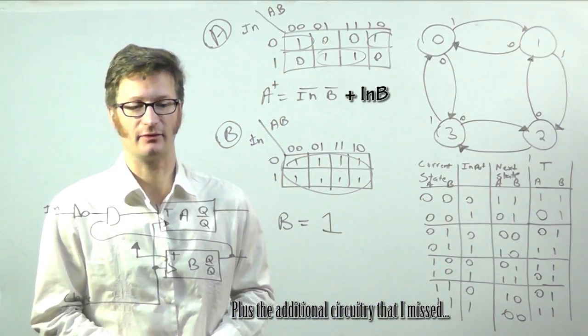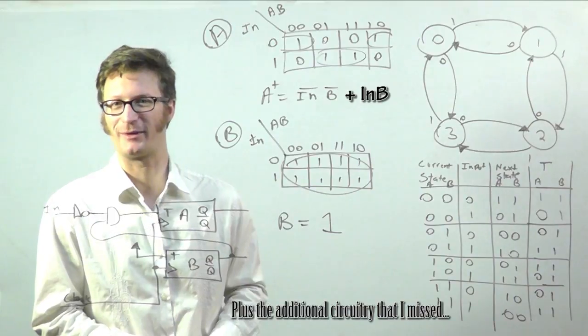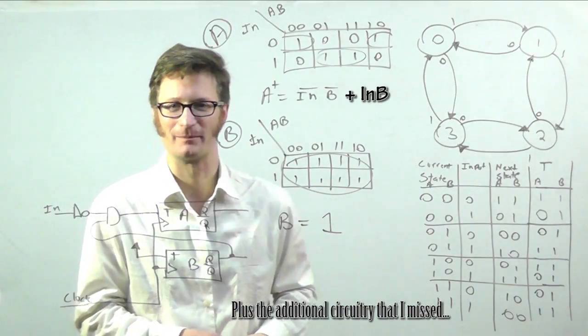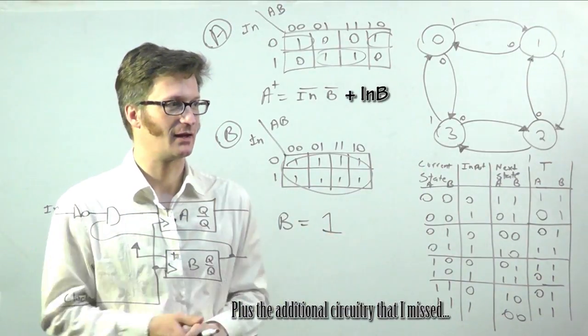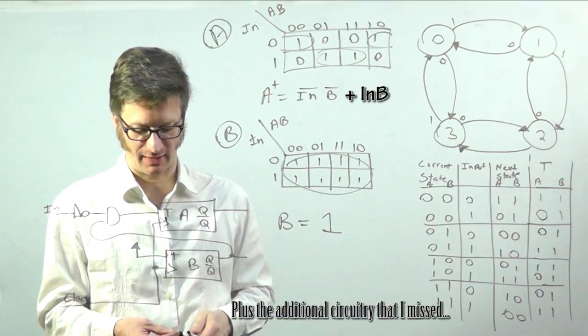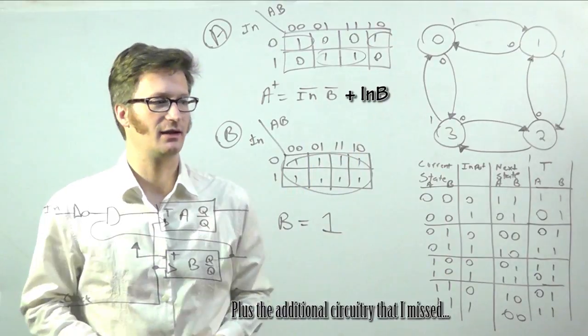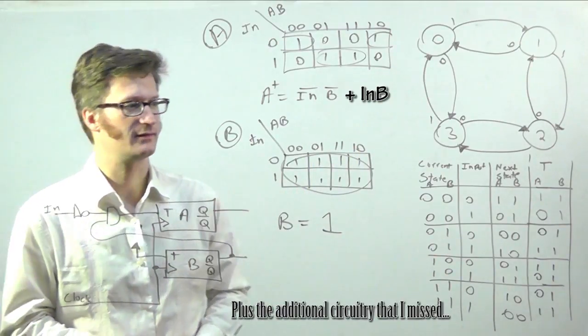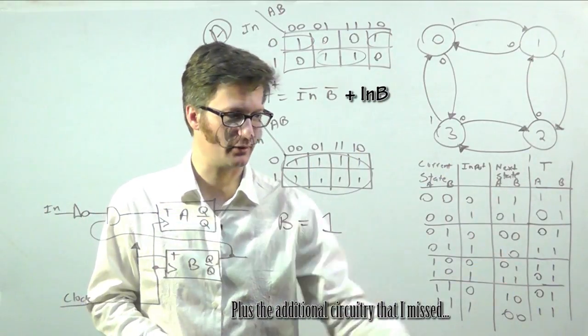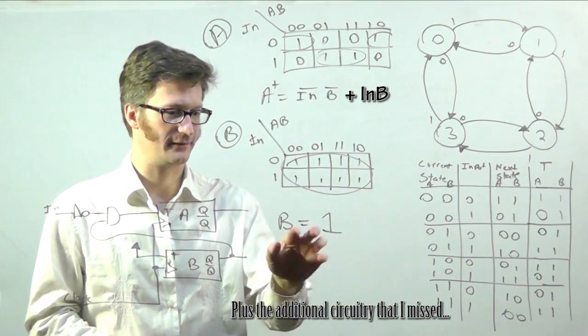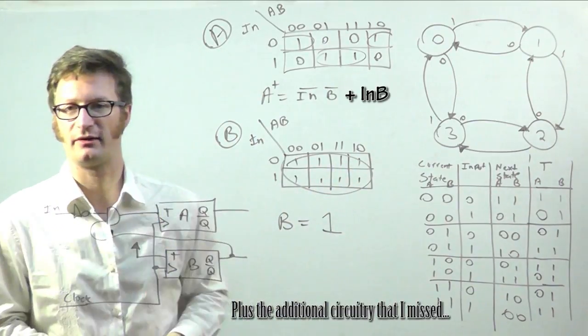So that's that. That was actually a pretty simple circuit. I was expecting it to turn out to be a little bit more. Anyway, that's how you create a circuit from a T flip-flop. And you can do this with any circuit, any number of bits, just follow the same routine where you create your Karnaugh maps, figure out what your logic needs to be to go to the input.